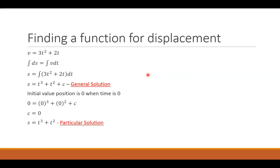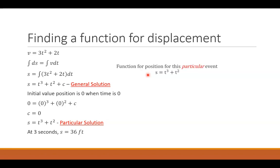So now we've got the displacement as a particular function equal to t cubed plus t squared — C is zero. And at three seconds, the displacement is 36 feet. That is the initial value portion of the problem. That is the function for the displacement.